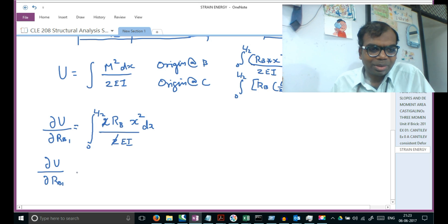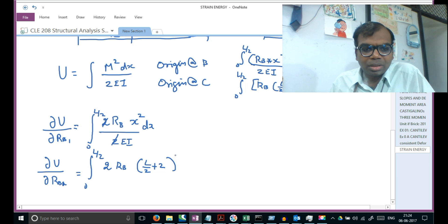I still have the 0 to L by 2 term, and I can cancel this 2, with the dx term. For the other one, dU by dRB, watch here - we need to pay attention. This is one term, so it becomes RB square, which gives 2RB times this constant L by 2 plus X.